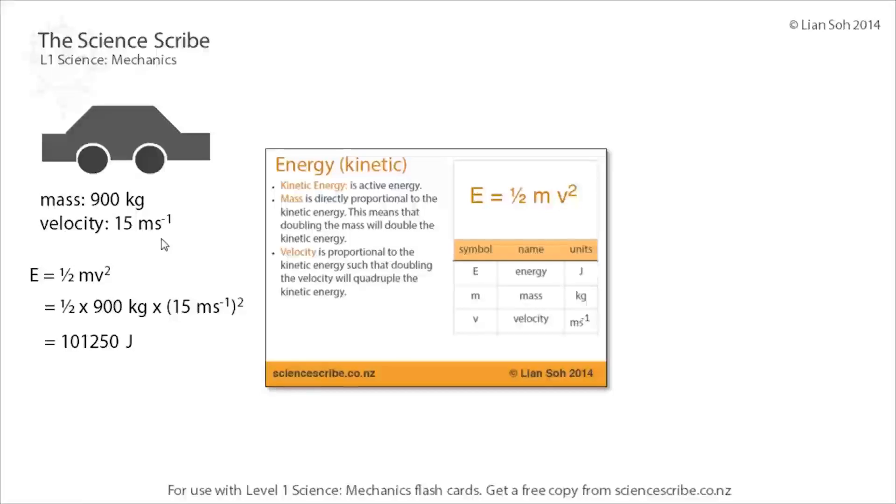Let's say in the exact same example, instead of a 900 kilogram car, I have an 1800 kilogram car that's also traveling at 15 meters per second. So I'm doubling the mass. If I then plug those numbers into the formula again...